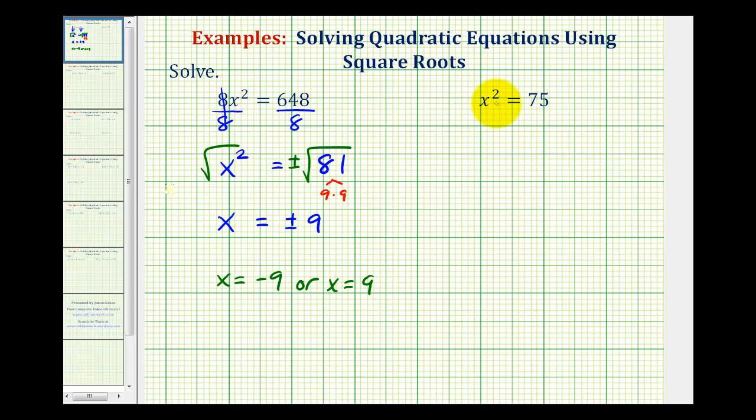Looking at our second example, notice how the x² is already isolated. So we can just take the square root of both sides of the equation as the first step.